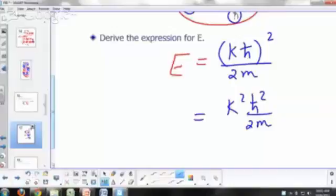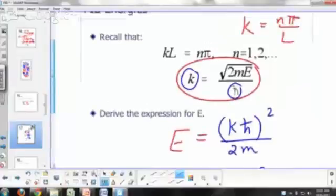That's the same formula we had for the free particle, except the difference between now and when we did the free particle is that now k is quantized, right? We now have restrictions on k. What are the restrictions on k? k must be equal to n pi over L. It must be an integer multiple of pi over L.